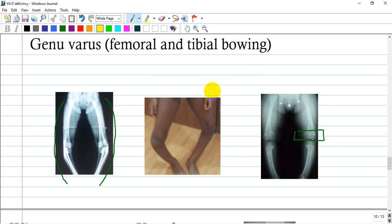Or genu varum, or femoral and tibial bowing or deformity. Clinically it is easily distinguished, and even on a lower limbs x-ray.